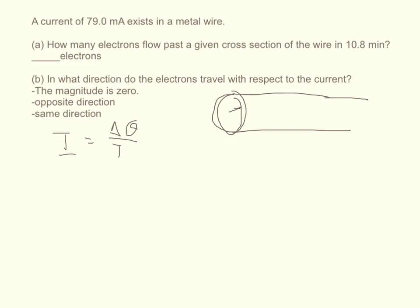So the number of electrons that go through that area in a given amount of time is equal to the charge. And so we can figure out what the charge is.